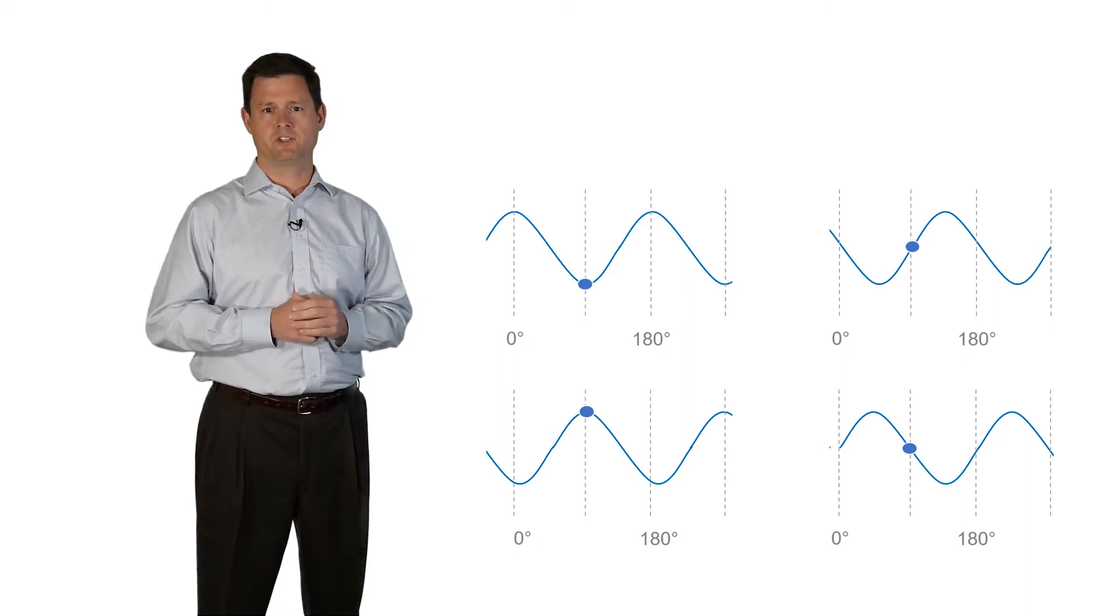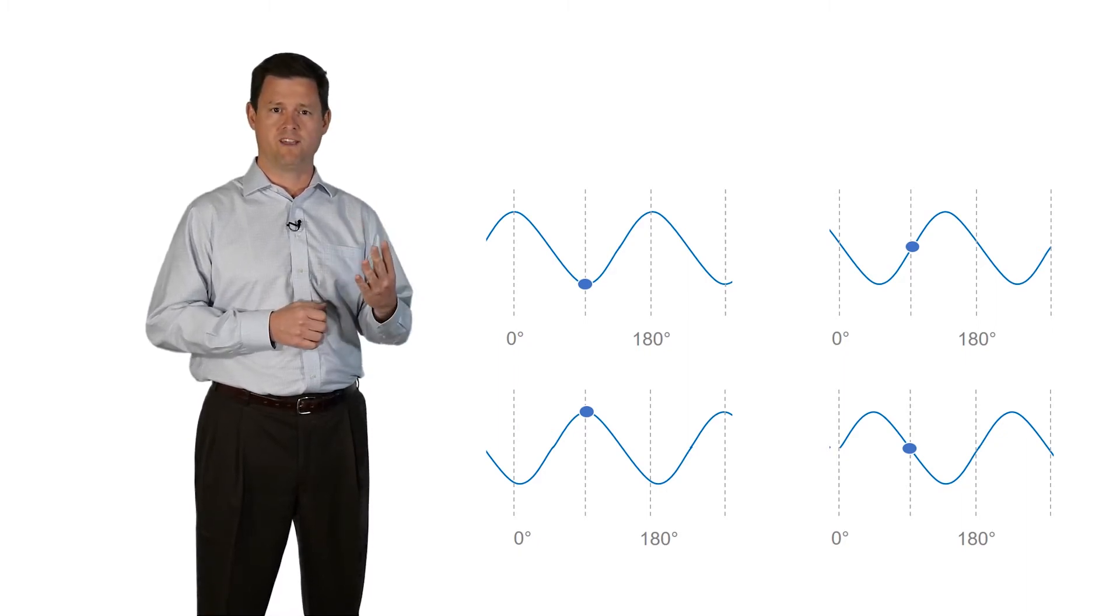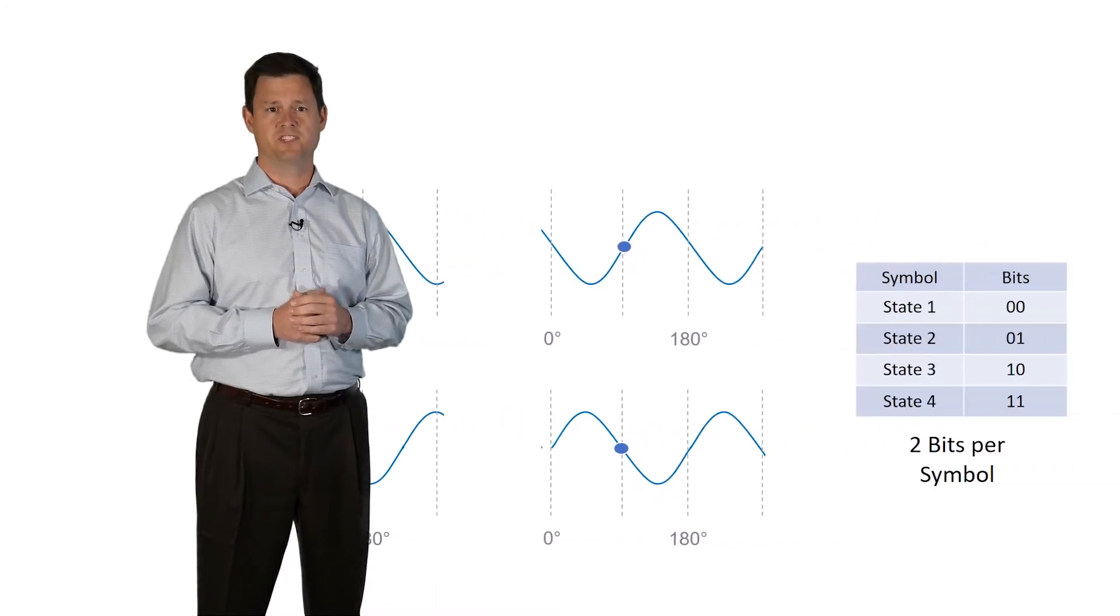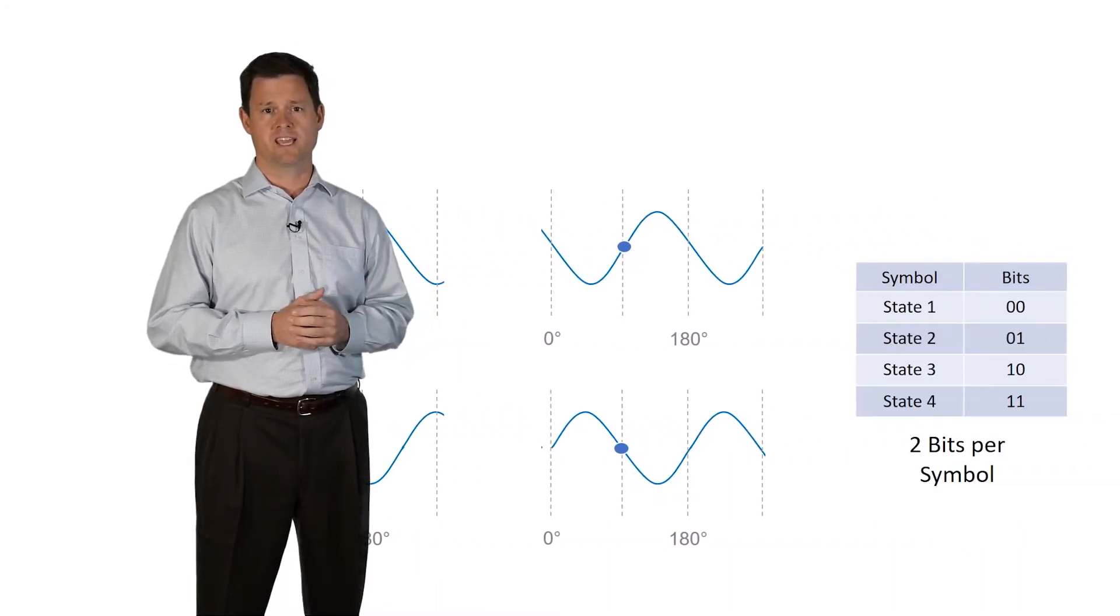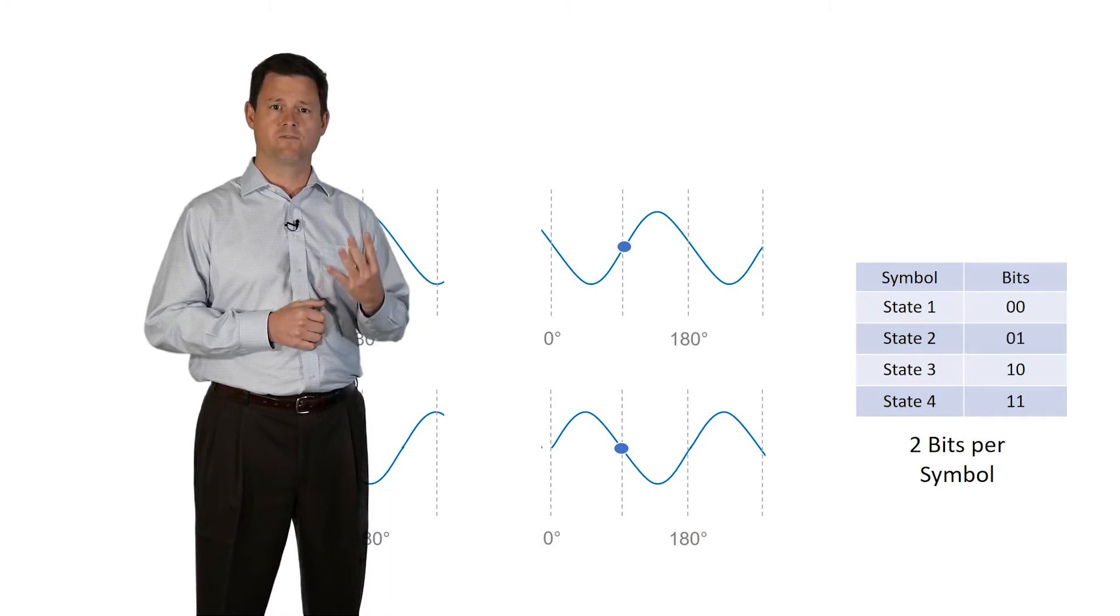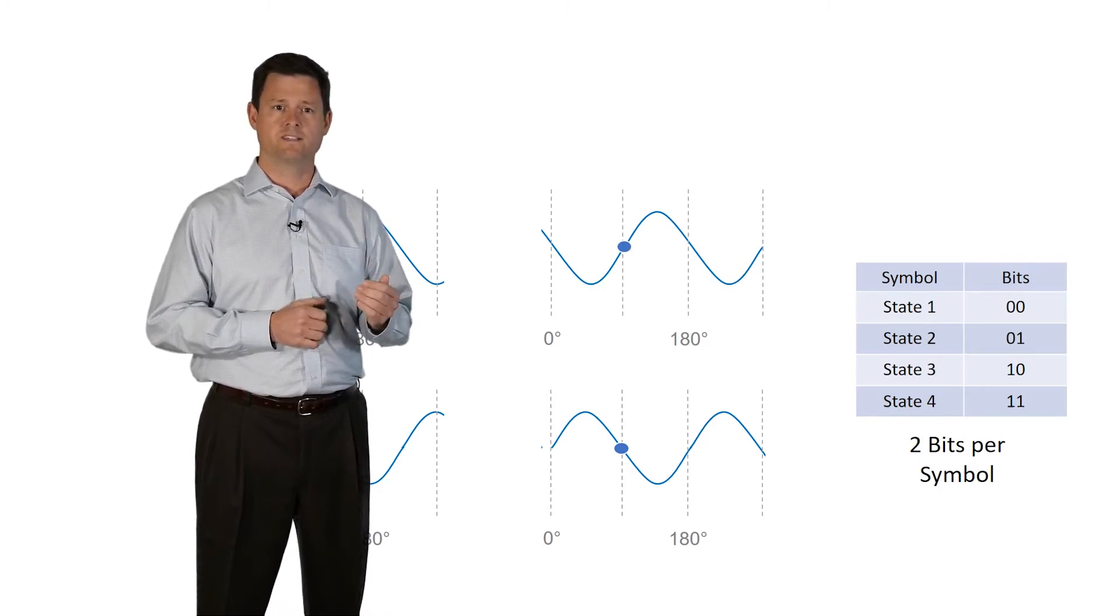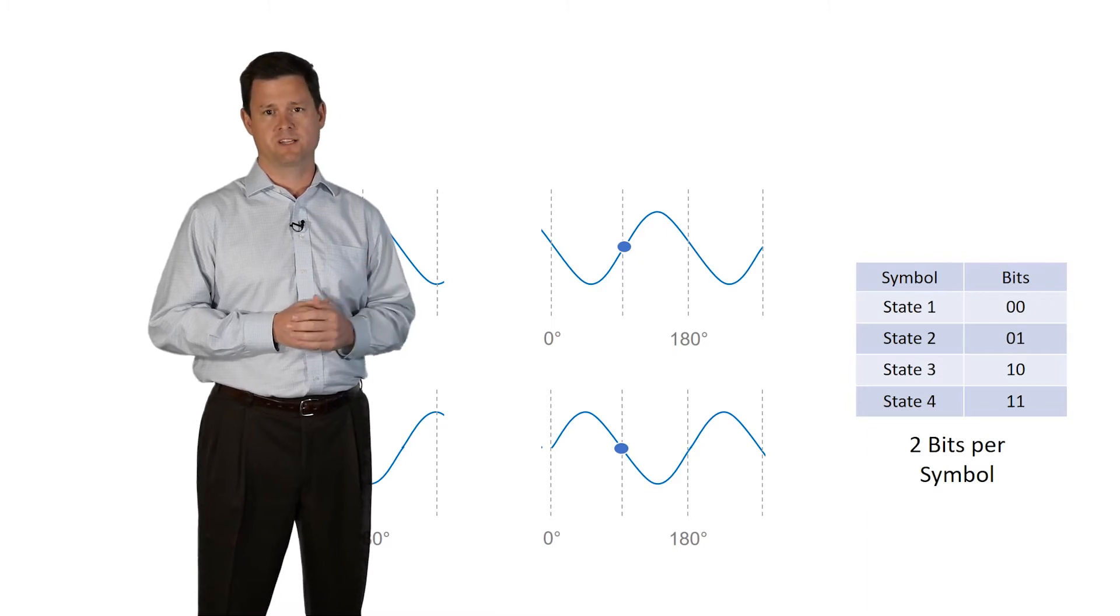A typical type of transmission is one that uses four phase states. This type of signal is called quadrature phase shift keying, or QPSK. Here we're detecting four different phases of the signal, so you're getting twice as much information from the same signal.